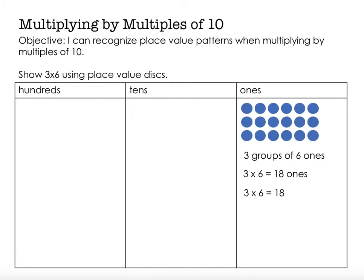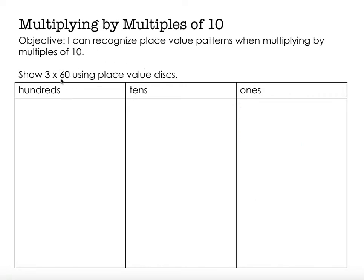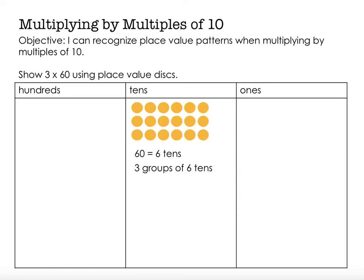Now we're going to do the same thing, except this time instead of 3 times 6, we have 3 times 60. 60 is 10 times bigger than 6. Another way of thinking about 60 is to call it 6 tens. So I'm going to do 3 groups of 6 tens — notice I have moved to the 10s column. Here's 1 group of 6 tens, a 2nd group of 6 tens, and a 3rd group of 6 tens. Counting by 6s: 6, 12, 18.